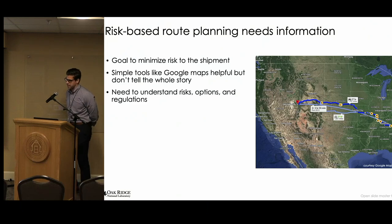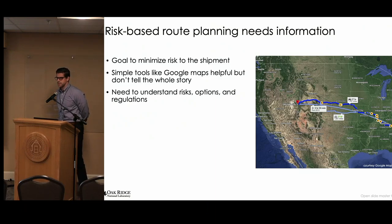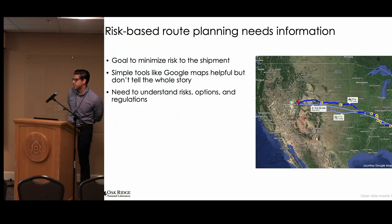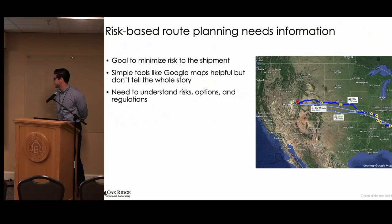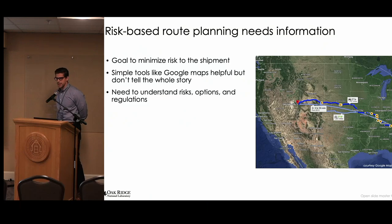For risk-based routing, the big thing you need is information. The goal here is to minimize the risk posed to the shipment. This is risk for hazardous materials getting shipped across the United States, and the type of risks you might run into is something like a terrorist trying to hijack that truck and gain those shipments and use it against the United States. Simple tools like Google Maps are great for getting the quickest route from Oronel to Salt Lake City, but they don't tell the whole story. We need to understand the risks, different routing options that we have, and any regulatory attributes that we might care about.